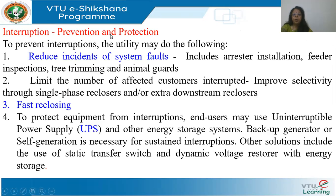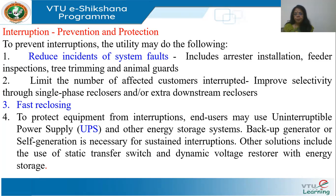To prevent and protect against interruptions: reduce the incidence of system faults by including surge arrestors, inspecting feeders, doing tree trimming to reduce short circuits, and installing animal guards. Try to limit the number of users affected — improve selectivity so that if one line goes out, only a localized set of customers is impacted.